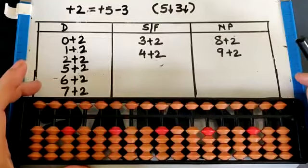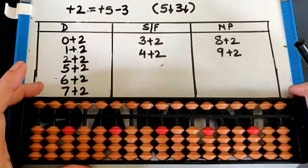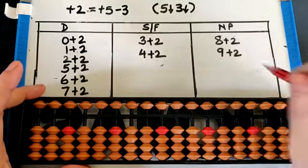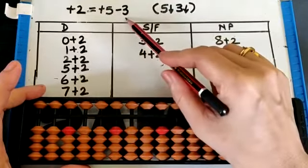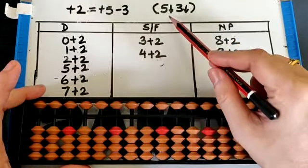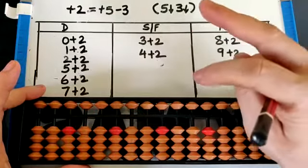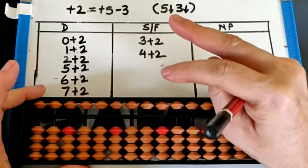Let's do plus 2 small friend. The small friend of 2 is 3, so the formula is plus 5 minus 3. The directions will be 5 down, 3 down - so 5 down with the big finger and 3 down with the index, both come down together.